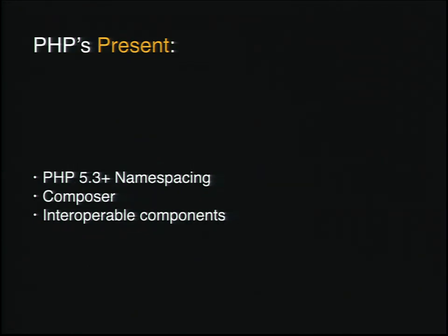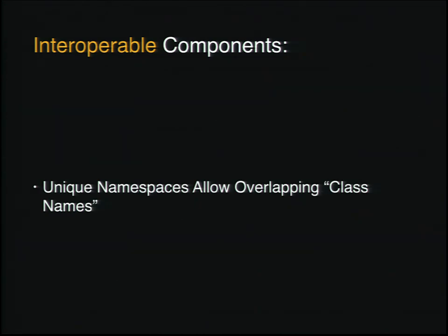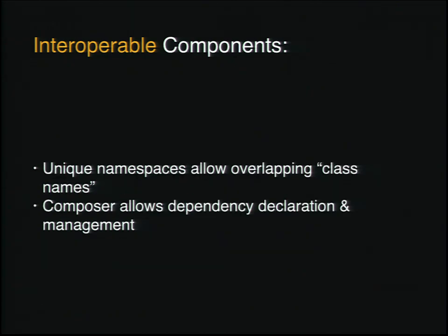All of this stuff has kind of conspired together in order to give us what I'm going to term interoperable components. And when we start talking about interoperable components, because we have these namespaces, we can have overlapping class names. I can have query, you can have query, we can all have a query. And that's very nice because we can not worry so much about what we're naming things. This means that we can have lots of components that can stack on top of each other, and we can declare dependencies through Composer and actually manage these things.